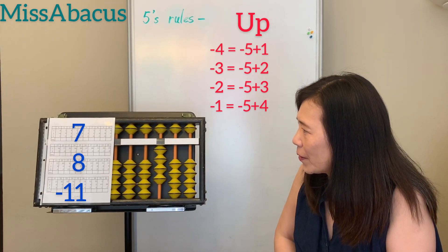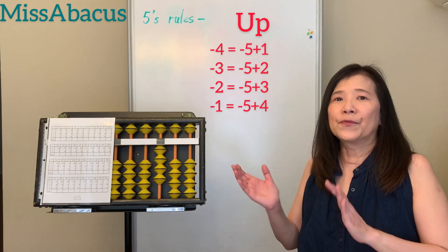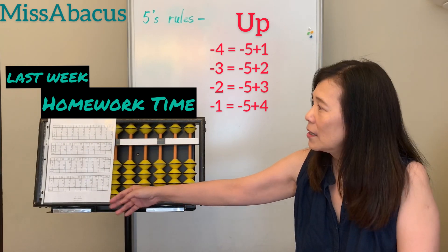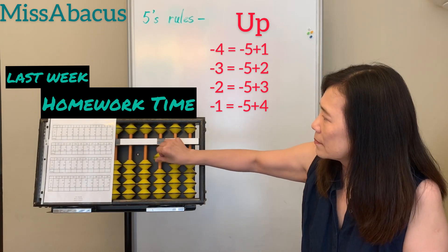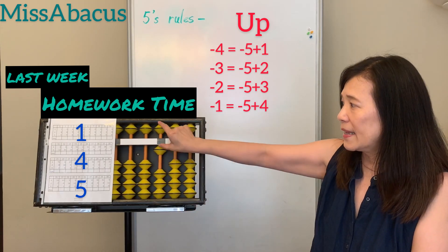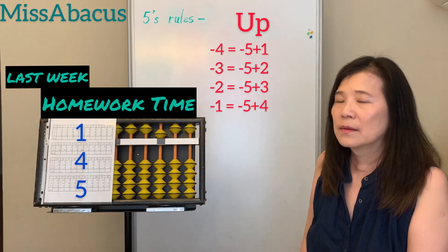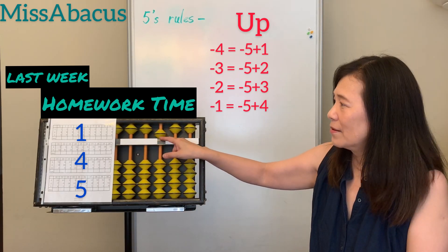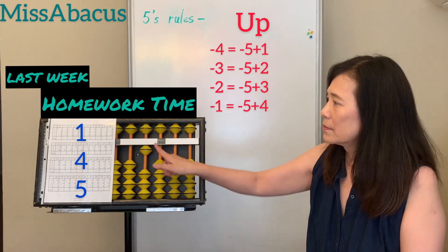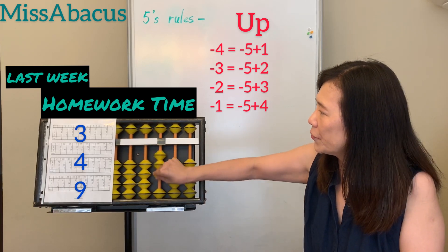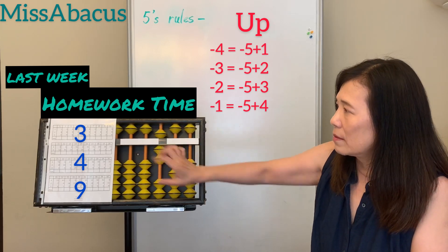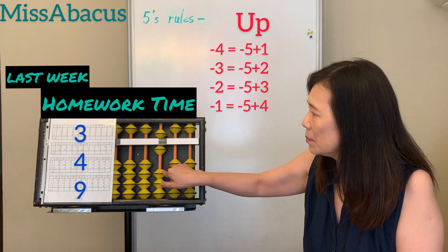Homework time — this is the first page from last week's homework. Problem 1: 1 plus 4. One, two, three — not enough, but you have 5. Plus 4 is down 5, down 1. Then plus 5: 10's rule — 5's complement is 5, minus 5, plus 10. Answer: 10. Next: 3 plus 4, plus 4 again. Then plus 9: 10's rule — minus 1, plus 10. Answer: 16.